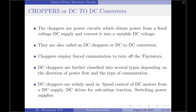Moving on to the next type of power converter: the DC to DC converter, also called a DC chopper. DC choppers are power circuits that obtain power from a fixed voltage DC supply and convert it into a variable DC voltage. Since the input voltage type is DC, they employ forced commutation to turn off the thyristors used as switching elements. DC choppers are further classified into several types depending upon the direction of power flow and the type of commutation employed. Choppers are widely used in speed control of DC motors from a DC supply, DC drives for suburban traction, and switching power supplies.